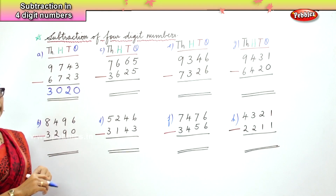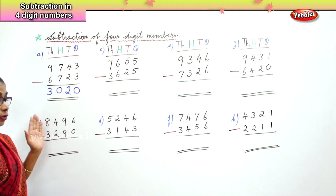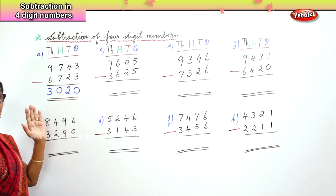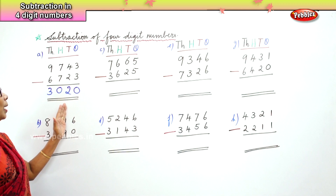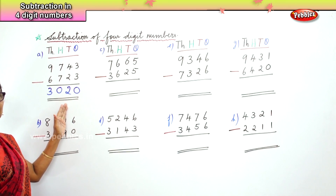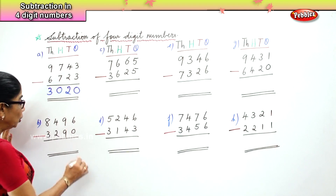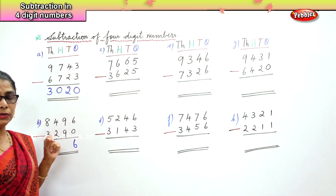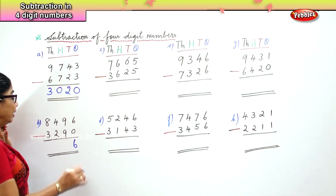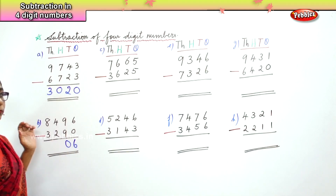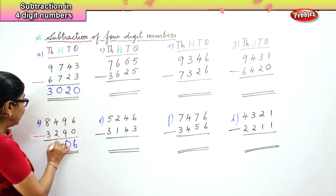Now you know how to do subtraction of four-digit numbers — all we need to do is be a little careful. In the next sum, we have 8,496 minus 3,290. In the ones place, you have 6 minus 0 — any number minus zero is the number itself. In the tens place, we have 9 tens minus 9 tens — 9 take away 9 is zero. In the hundreds place, we have 400 minus 200 — 4 minus 2 is 2.